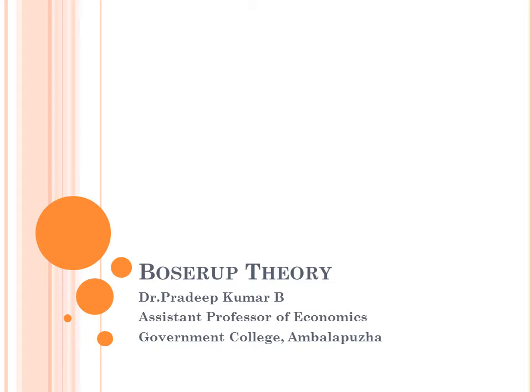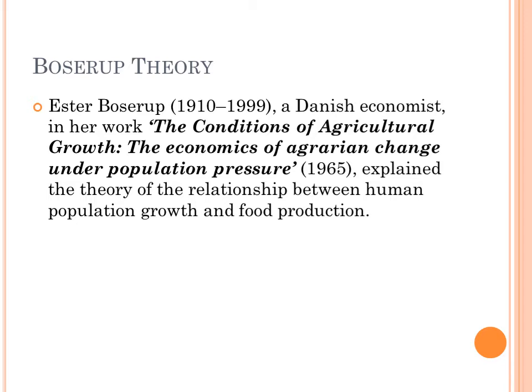In the second module of the syllabus of agricultural economics, there are four important theories: one is Lewis's model of agricultural supplies of labor, second is Boserup's theory, third is Malay's theory, and the fourth is Kobov's theory. Today we take up for discussion Boserup's theory of agricultural transformation.